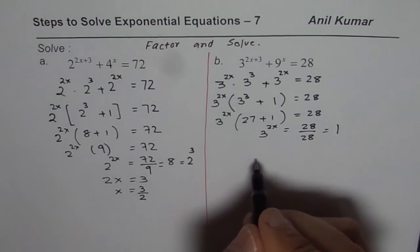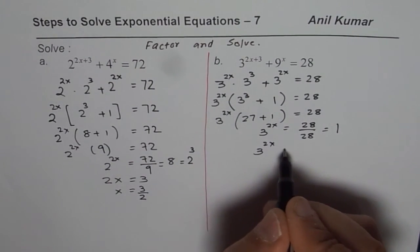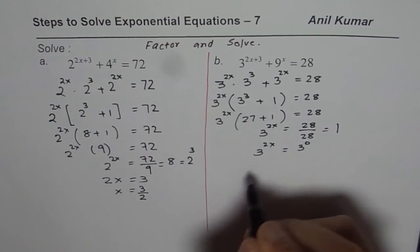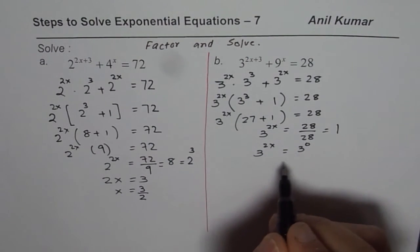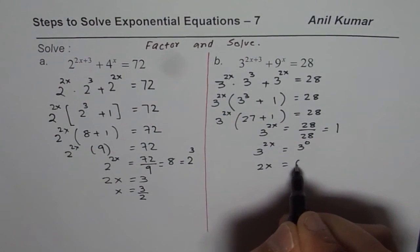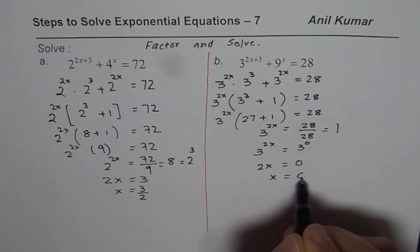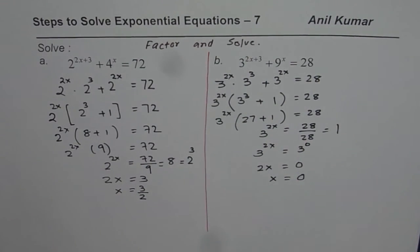1 could be written as 3 to the power of 0, so anything to the power of 0 is 1. That means 2x should be equal to 0 or x is equal to 0. So our solution is x equals 0.